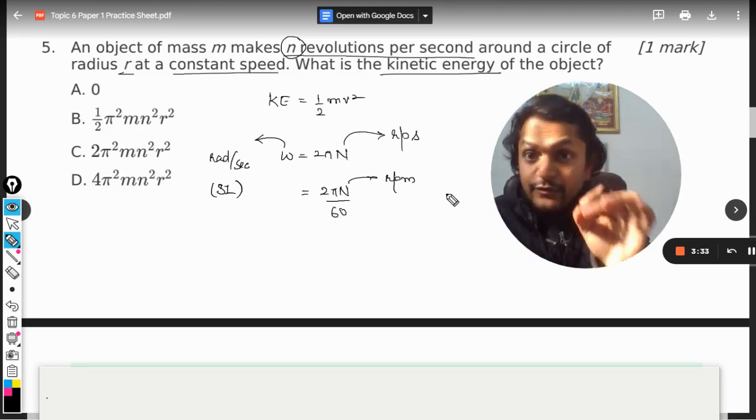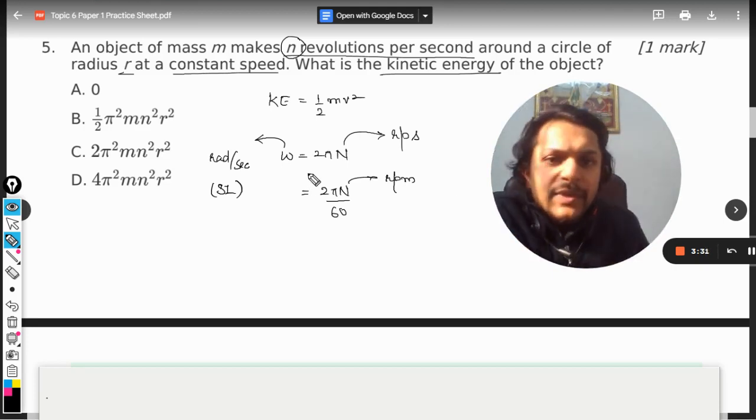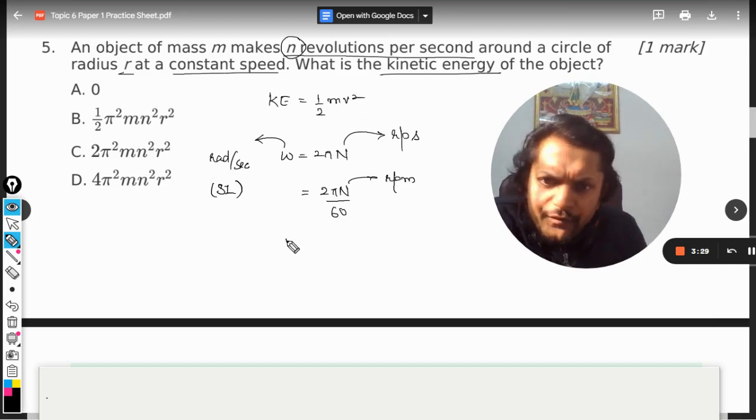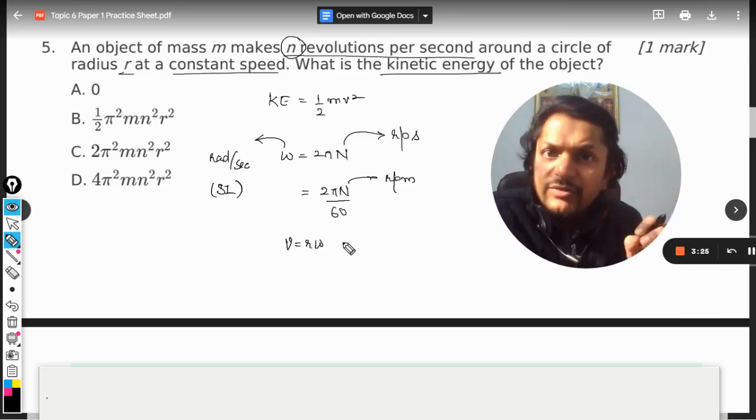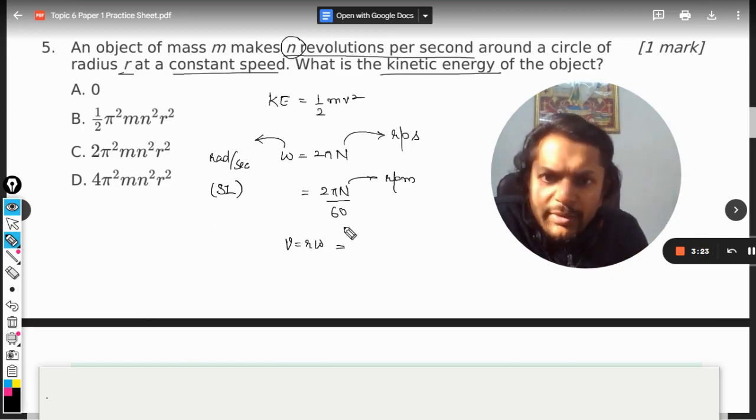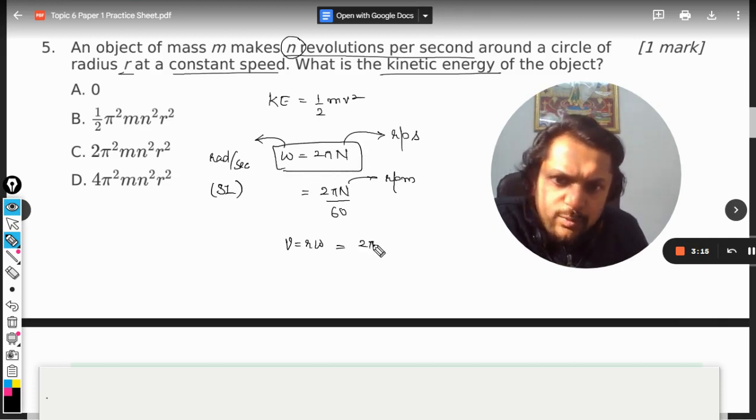Anyways, let us move ahead. Now v is equal to r omega, we know this, the tangential velocity of the body. So omega is this I can say, so in our case it is rps, so we would be using this. So it will be 2 pi n into r.